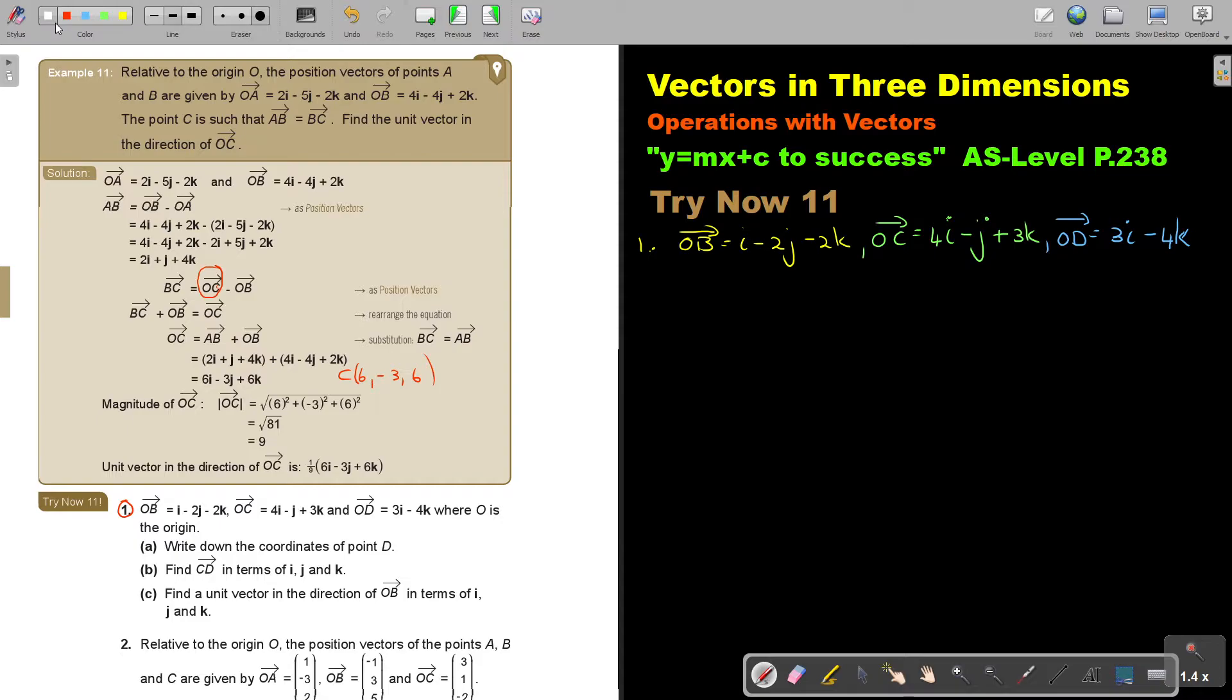Let's start. Number A: Write down the coordinates of point D. Now remember, this is OD, which is 3i plus 0j minus 4k because it's three-dimensional. So the coordinates are 3, 0, and negative 4. That will be the coordinate of D.